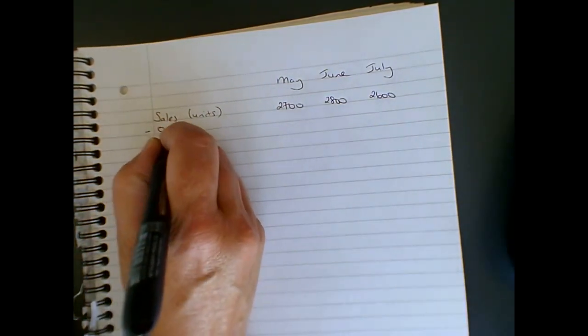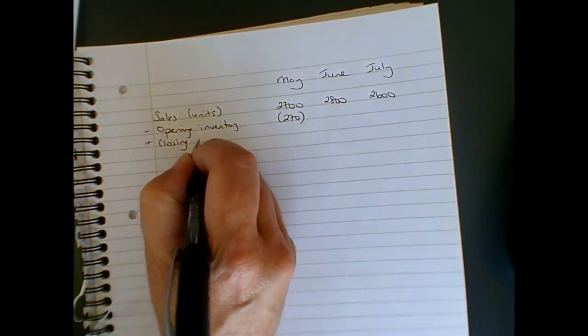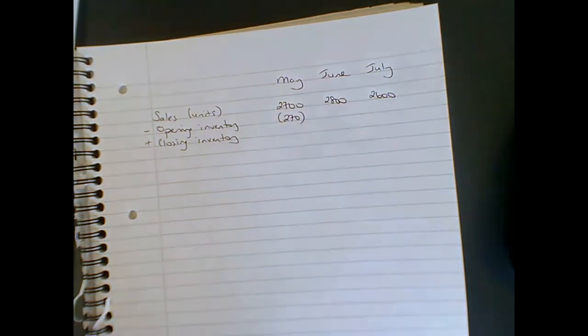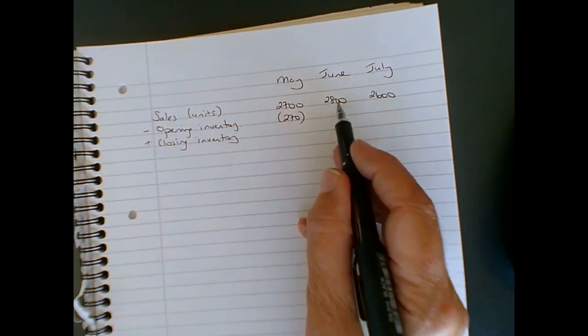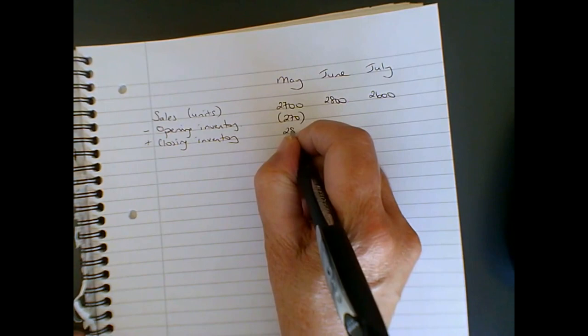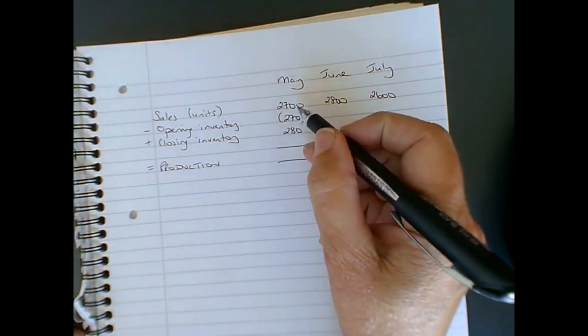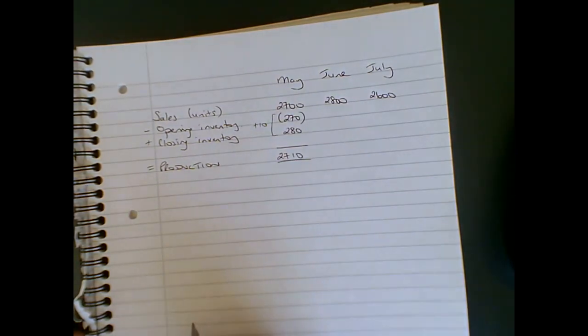We need to deduct opening inventory. We don't need to make that, it's already there. We've got 270 units in stock at the beginning of May, so we're going to take those off. Then we need to add on the closing inventory, because we need to make sure that our production is enough to satisfy sales, and then plus any increase in the inventory levels or minus if we're reducing the inventory. Each month's inventory is maintained at 10% of the following month's sales. For June, we're anticipating sales of 2,800, so 10% of that is 280. We're going to sell 2,700, and we're going to increase inventory by 10 units. So that means we need to make 2,710 units.